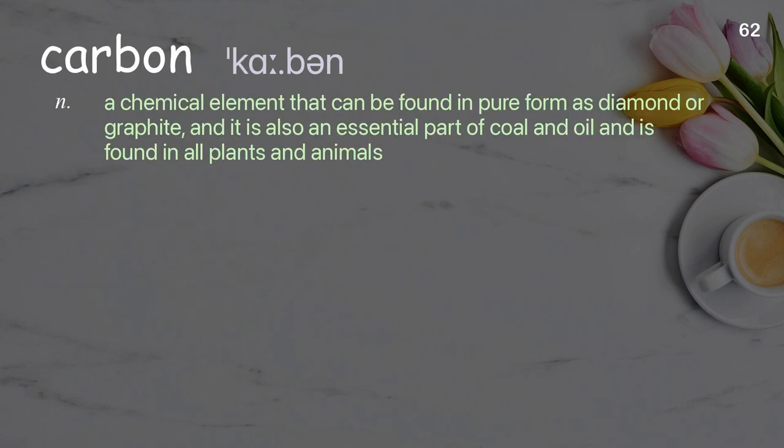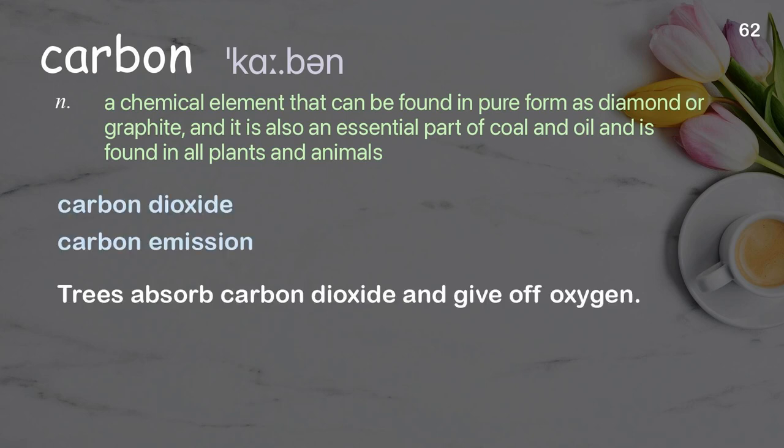Carbon: A chemical element that can be found in pure form as diamond or graphite, and is also an essential part of coal and oil and is found in all plants and animals. Examples: Carbon dioxide, carbon emission. Trees absorb carbon dioxide and give off oxygen.